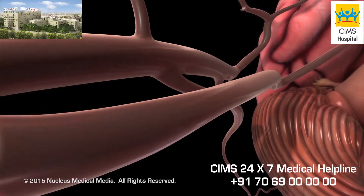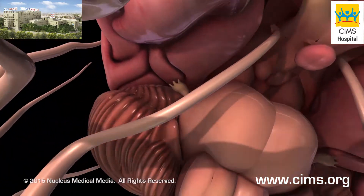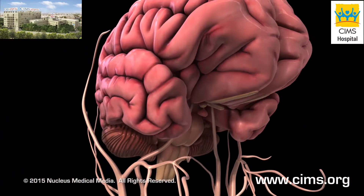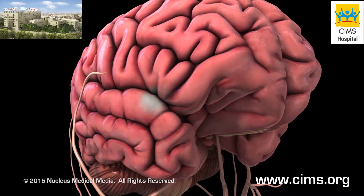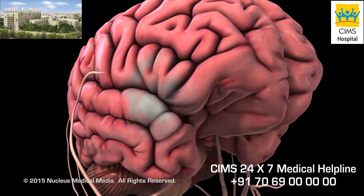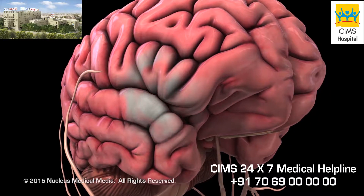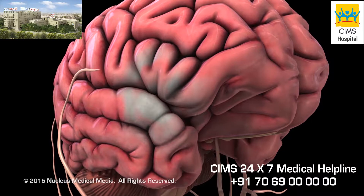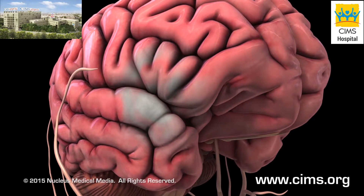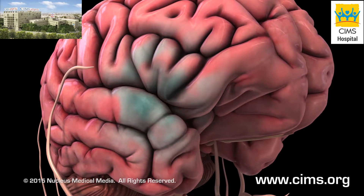If blood flow to the brain is blocked temporarily, a transient ischemic attack, also known as a TIA, may occur. When the blood flow is completely obstructed, as in a carotid artery blockage, a stroke can occur.